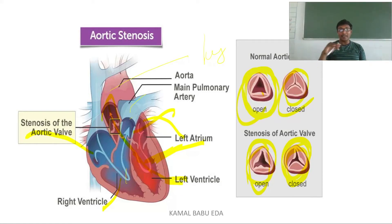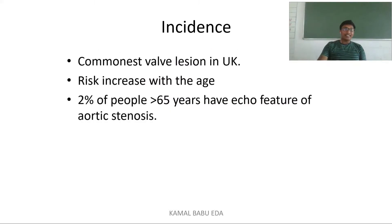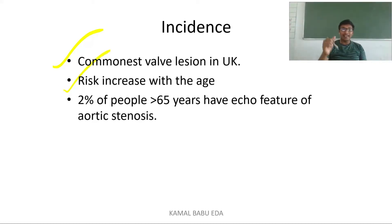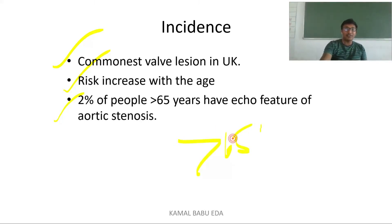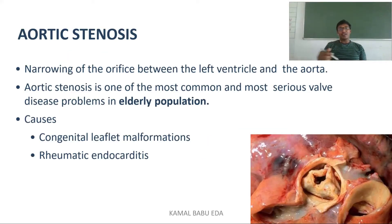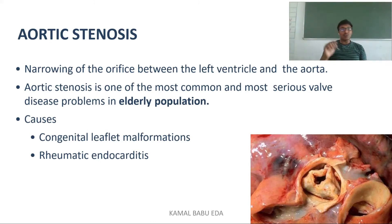Regarding incidence, aortic stenosis is the commonest valve disease in the United Kingdom, and the risk increases with age — two percent of people above 65 years have features of aortic stenosis. It is defined as the narrowing of the orifice between the left ventricle and the aorta, and is one of the most common and serious valve disease problems in the elderly population.